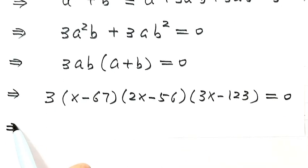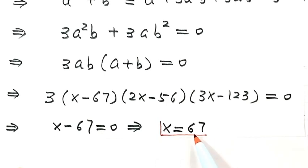Next, let each factor equal zero. So set the first factor equal to zero. Then x minus 67 equals zero. Then solve for x. x equals 67. That's the first solution.